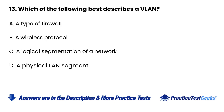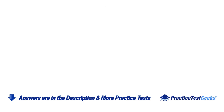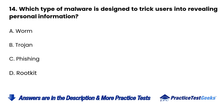Question 13: Which of the following best describes a VLAN? A. A type of firewall. B. A wireless protocol. C. A logical segmentation of a network. D. A physical LAN segment.